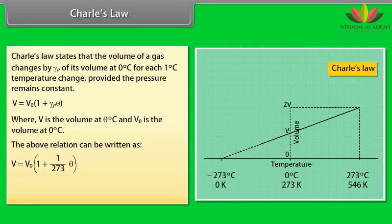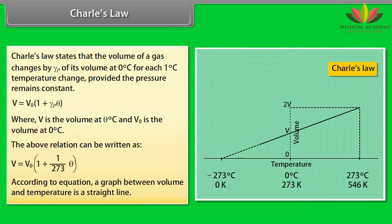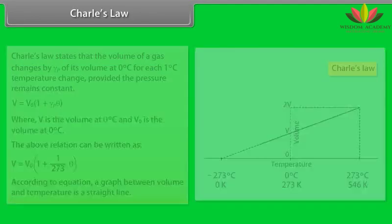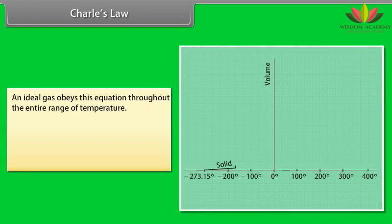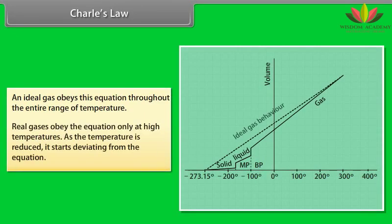According to equation, a graph between volume and temperature is a straight line. An ideal gas obeys this equation throughout the entire range of temperature. Real gases obey the equation only at high temperatures. As the temperature is reduced, it starts deviating from the equation.